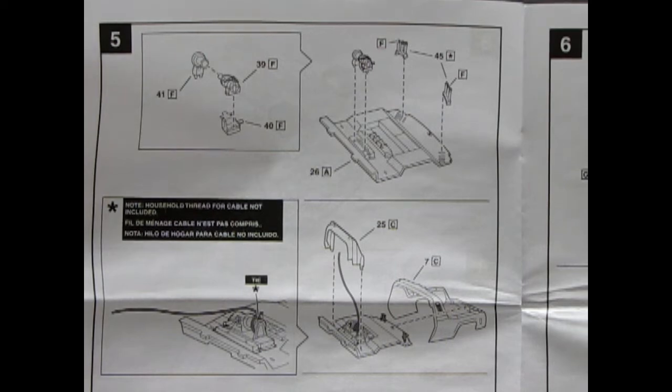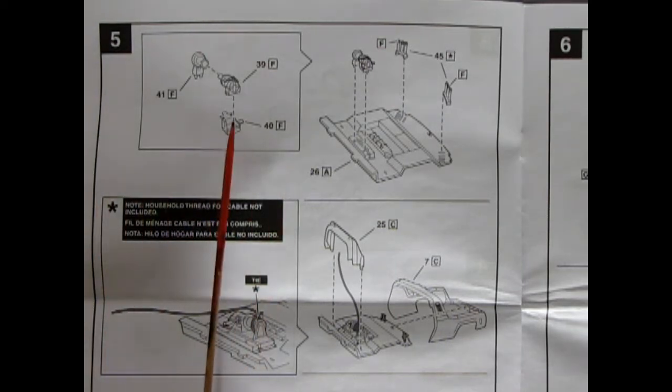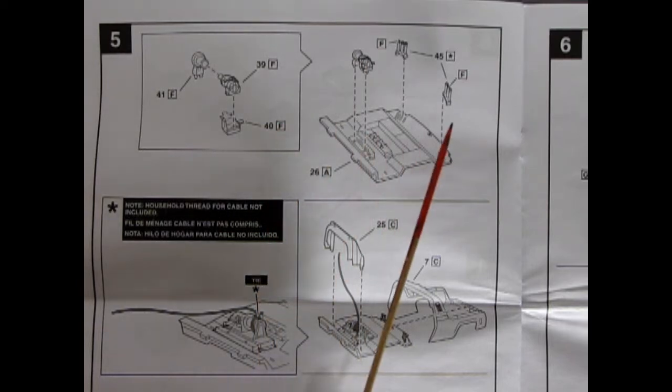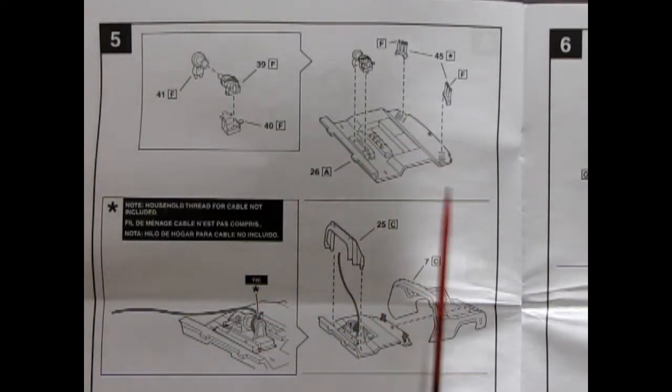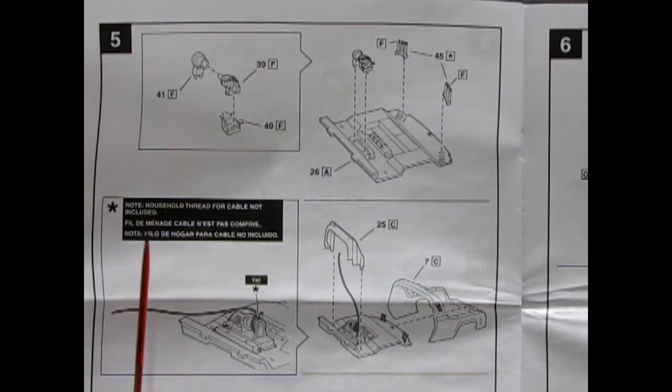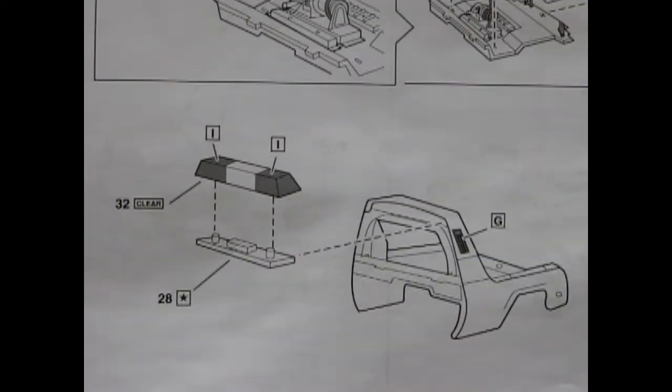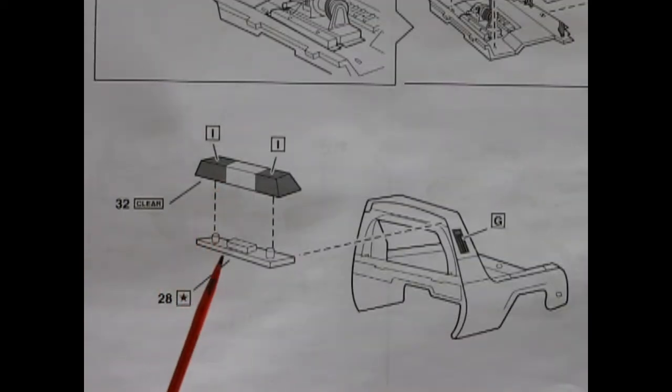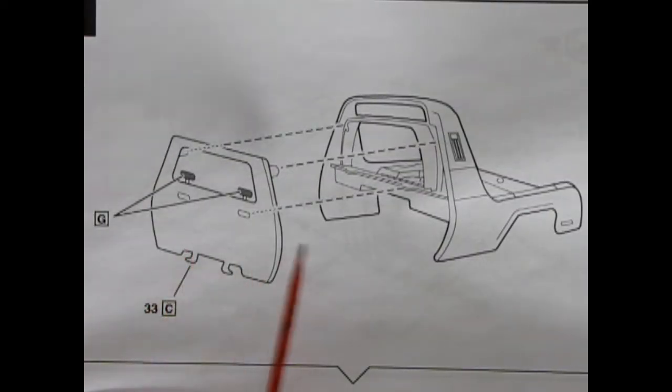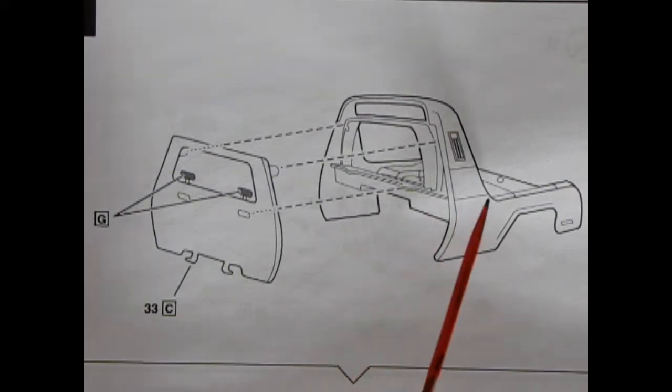Now this is where our build starts to get a little more intense. Here we have the three piece winch for our tow truck as well as the controls which go onto the back pan. Then down here it says note household thread for cable not included so you'll have to supply that yourself. But you will tie it onto the winch here and then leave it loose. The next panel shows our two piece lights for our wrecker being attached up onto the roof of this back panel, and then we have our bulkhead being glued into place over the back of this panel.